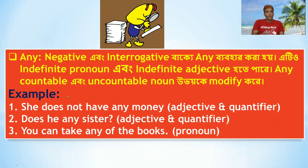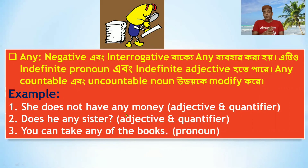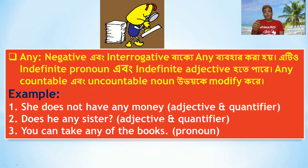For 'any': it is used in negative sentences and questions. For example: 'She does not have any money' — here 'any' is used with an uncountable noun in a negative sentence, functioning as an indefinite adjective or quantifier. 'Does he have any sister?' — countable noun in a question.